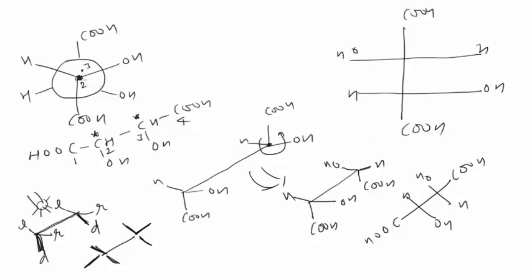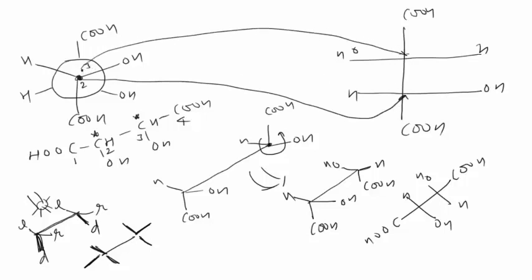Now you can directly convert the Neumann projection into Fischer projection. Since the Neumann projection is in staggered form, first you have to convert it into eclipsed form. You will bring CHO down by rotating the back carbon — so CHO will be down, OH will be left, and H will be right — and then directly write the Fischer projection.